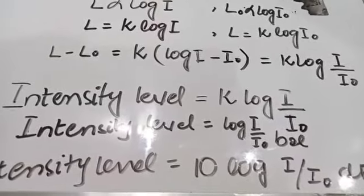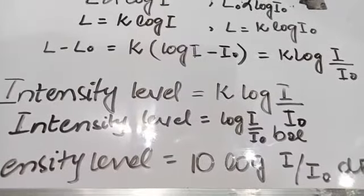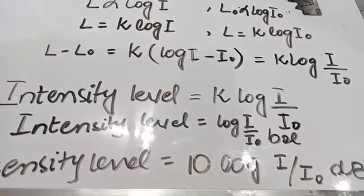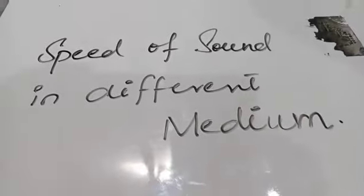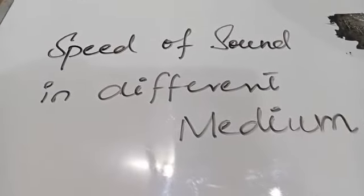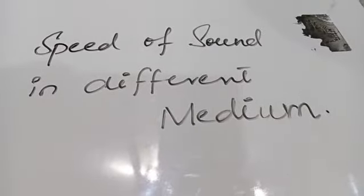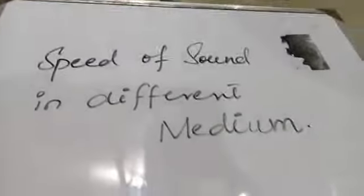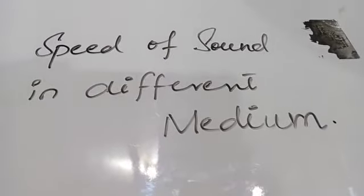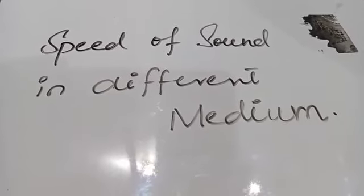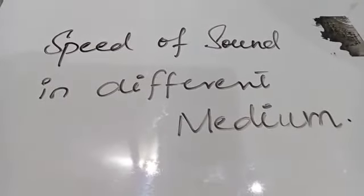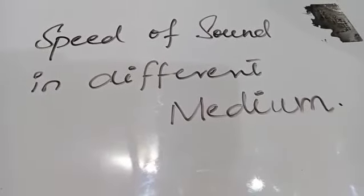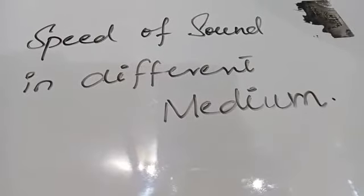Using this relation we can calculate the intensity level, and also calculate the intensity of sound if we know the intensity level. Next we will discuss the speed of sound in different media. As the medium changes, the speed of sound changes. Sound waves can be transmitted by any medium containing particles that can vibrate — solid, liquid, or gas.